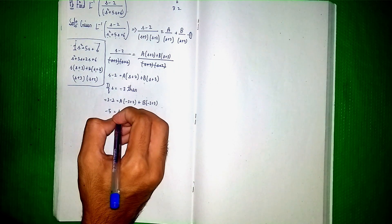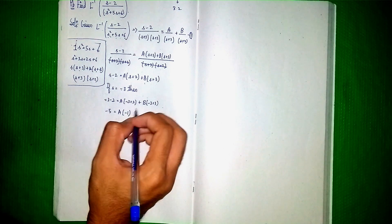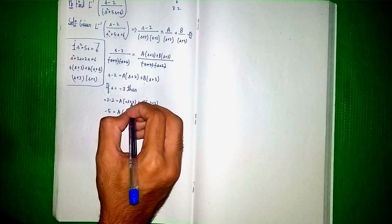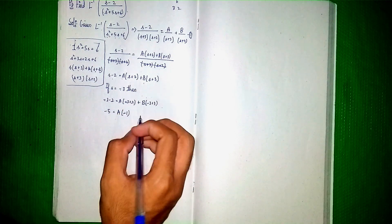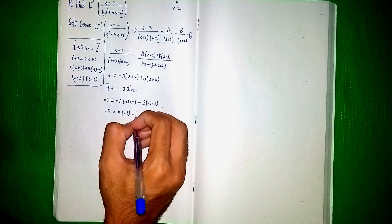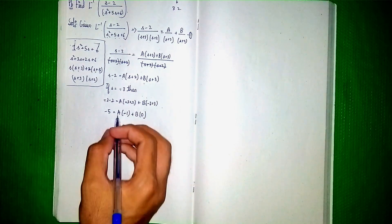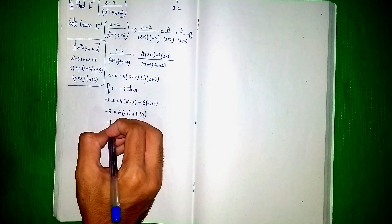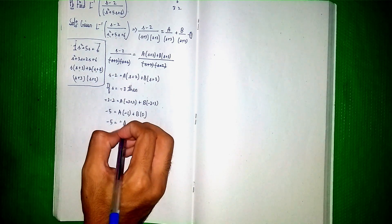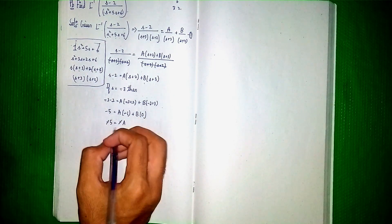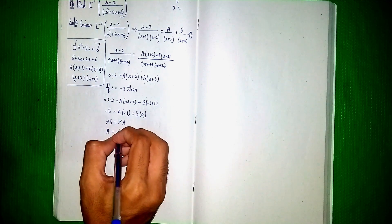So minus 5 equals A(minus 3 plus 2), which is A(minus 1), plus B(minus 3 plus 3), which is B times 0. So the B term is eliminated. We get minus 5 equals minus A. Since minus and minus cancel, A equals 5.